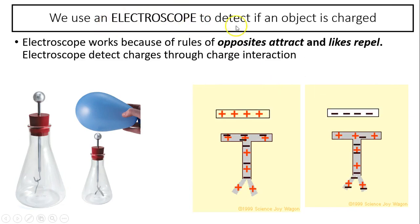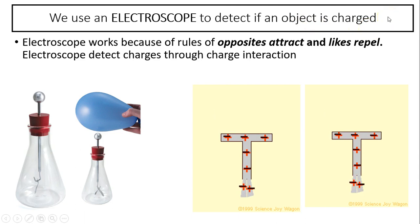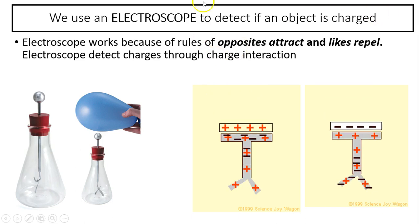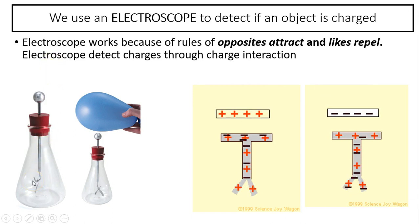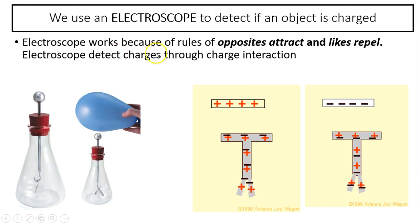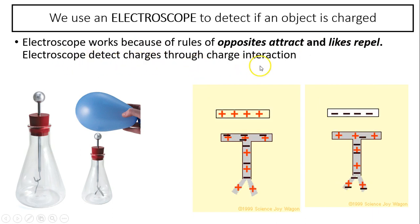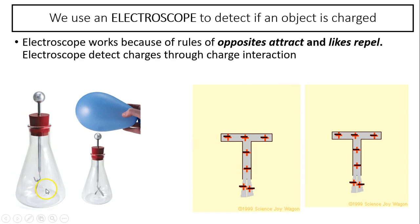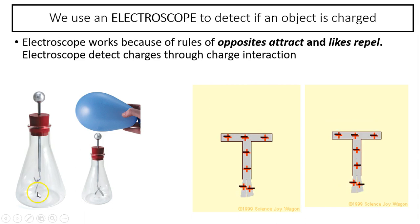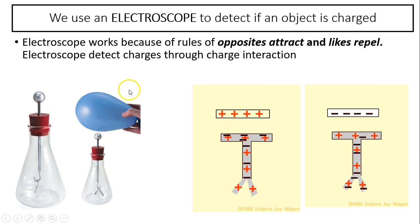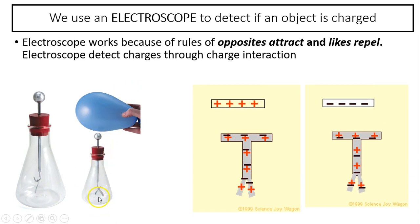We use an electroscope to detect if an object is charged. After you rub wool with a PVC pipe, how do you know the object is charged? We can use an electroscope. An electroscope is a device to detect charge — it does so using the rule that opposites attract and likes repel. It detects charge through charge interactions. Basically, it has a metal piece and two metal leaves. When it's neutral, the two leaves just hang there. But when you put a charged object near it, the two leaves will repel, and that tells you the object is charged.